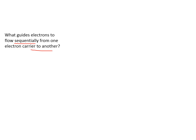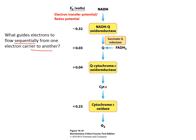Each component in the electron transport chain has a specific redox potential, also known as the electron transfer potential. A component with a negative redox potential has a higher tendency to donate its electrons compared to those with positive values, which have a higher tendency to receive electrons. Therefore, electrons always flow from components with a negative redox potential to those with a higher redox potential.